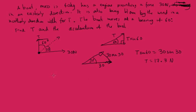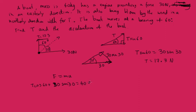Now we can use F equals MA, resolving in the direction of the motion. We know T equals 17.3. The force from T in the direction of motion is T cos 60, and the component of the engine force in the direction of motion is 30 cos 30. So T cos 60 plus 30 cos 30 equals mass times A, which is 40A. Rearranging, A equals 0.866 meters per second squared.